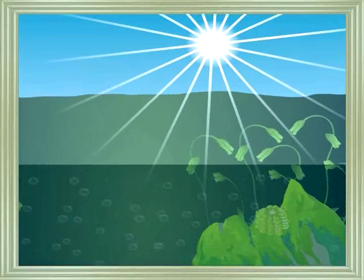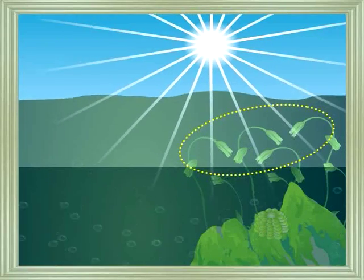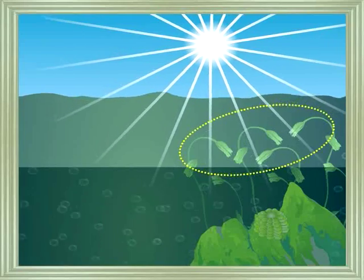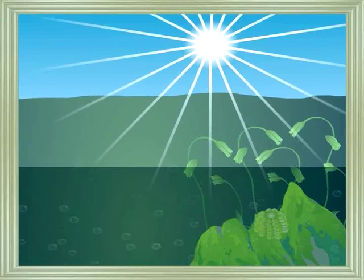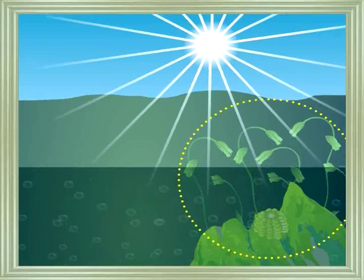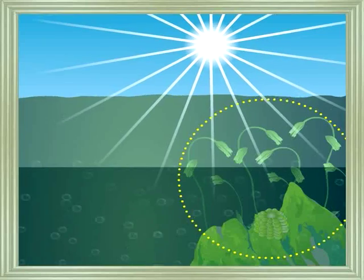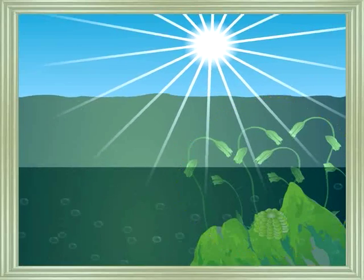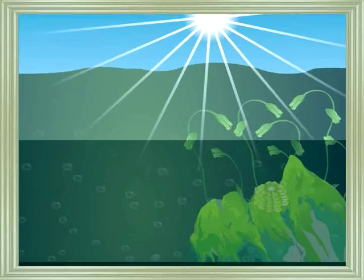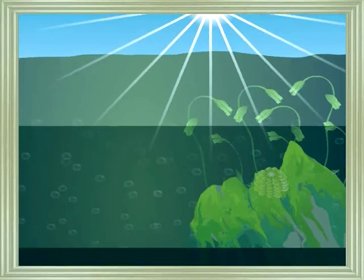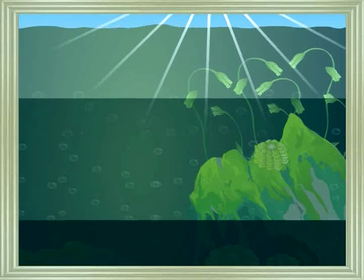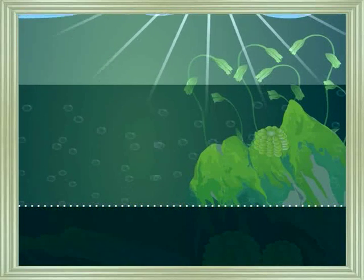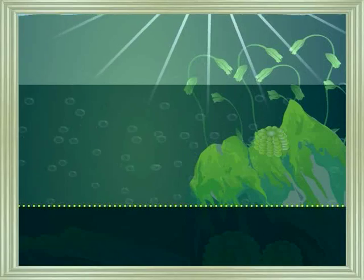Light for photosynthesis is available only in the euphotic or photic zone. In oceans, only planktons and a few algae perform photosynthesis. As depth increases, the availability of light decreases. In the abyssal zone, there is no light and it is completely dark.